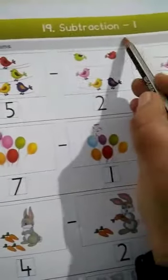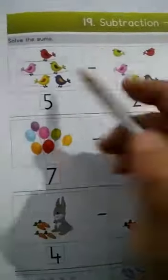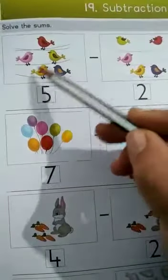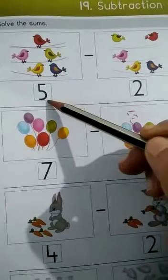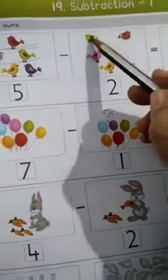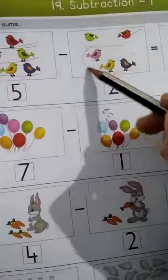Page number 27, topic number 19, Subtraction. Solve the sums. Here there are five birds, one, two, three, four, five, so number five is written here minus two. Don birds udunge leh, how many birds are there now? One, two, three.